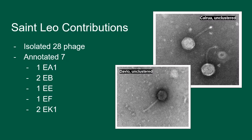St. Leo has been working with the C-phages program for three years. In that time, we have isolated 28 novel bacteriophage and we have contributed to the genomic annotation of seven. As you can see, all of which belong to E-type clusters.